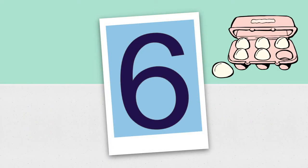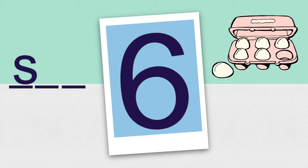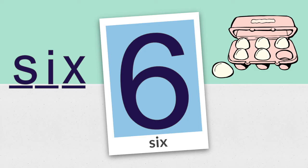Six: s, i, x. There are three sounds in the word six and three letters. I'm gonna say the sound and if you know the letter I want you to yell it out. S... i... x. Did you say s, i, x spelled six? If you did, give yourself a pat on the back. S, i, x spells six.